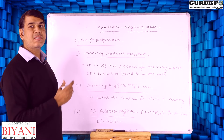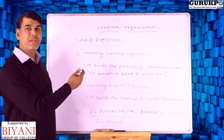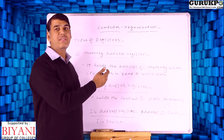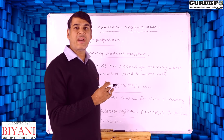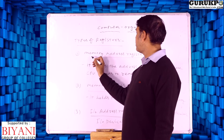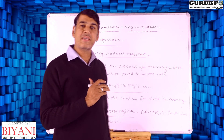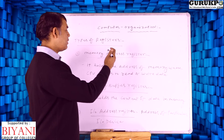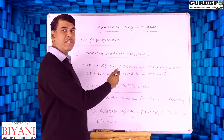Memory address register is the first register. It holds the address of memory basically where the CPU wants to read or write the data. In case we want to read or write data using the CPU, the CPU will use the memory address register, which specifies the address or location of the particular data or instruction.